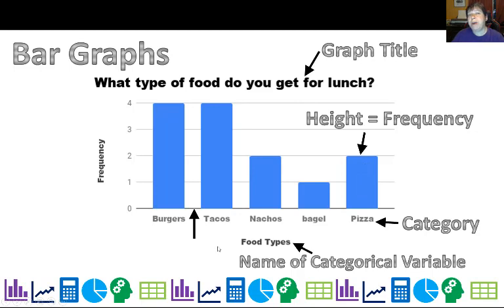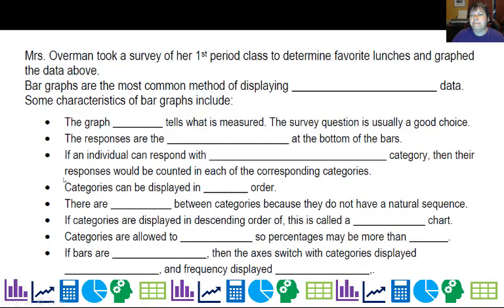One thing you might not have known is that we'll also be doing histograms in the next lesson. These bar graphs have a gap here. Histograms don't - histograms touch. That's how you can tell them apart. I took a survey of my first period class to determine favorite lunches and I graphed the data. Bar graphs are the most common method for displaying categorical data.